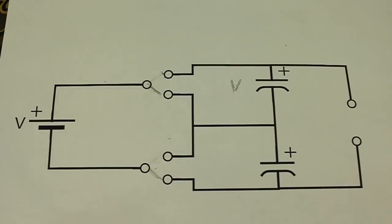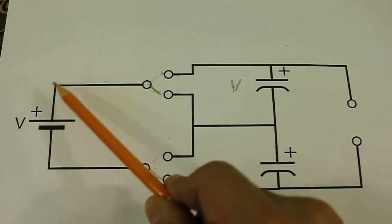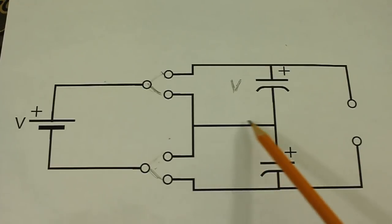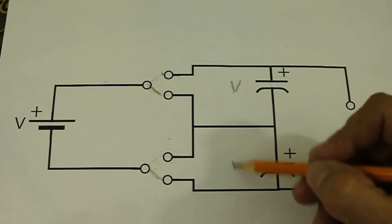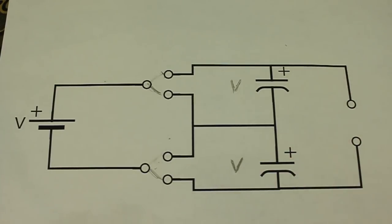And in this position, the current flows from here to the second capacitor and back to the battery. And now the other capacitor is charged also to the voltage of the input.